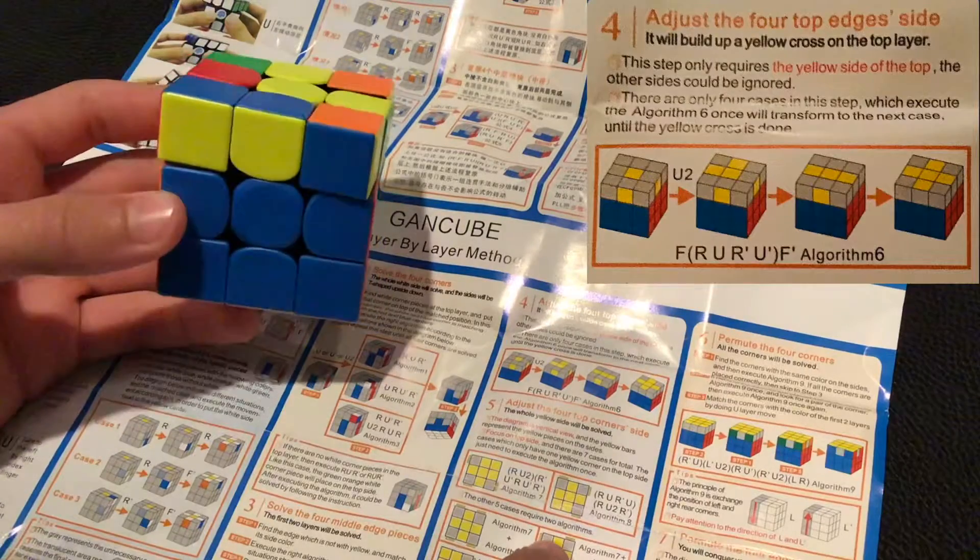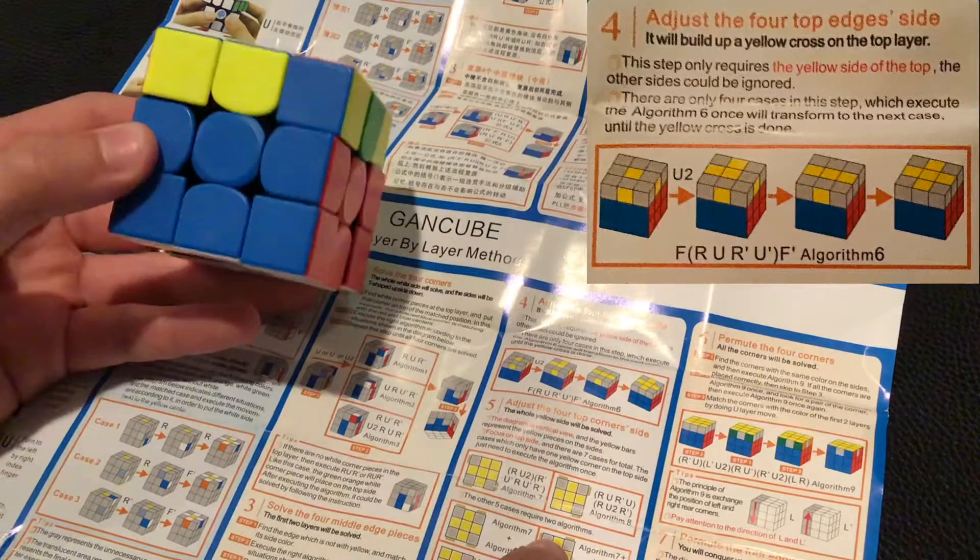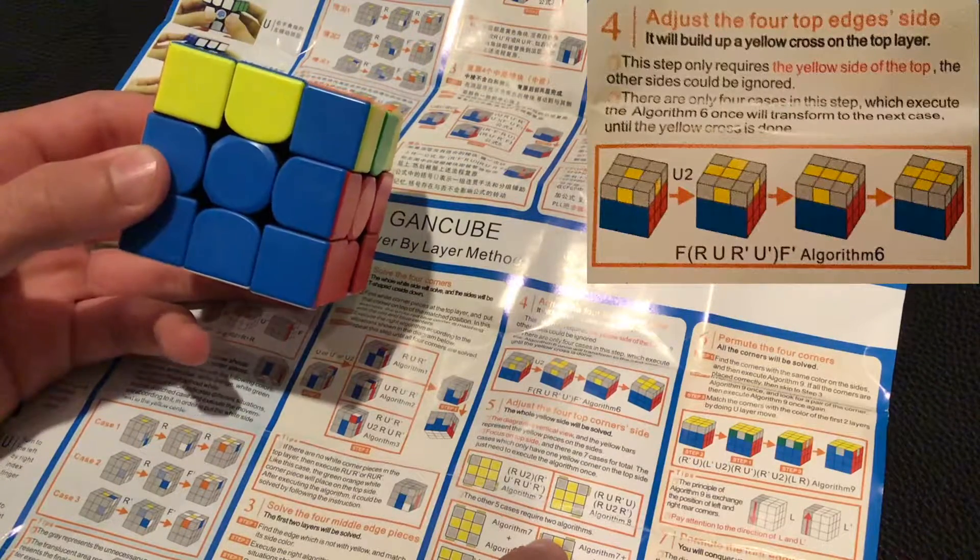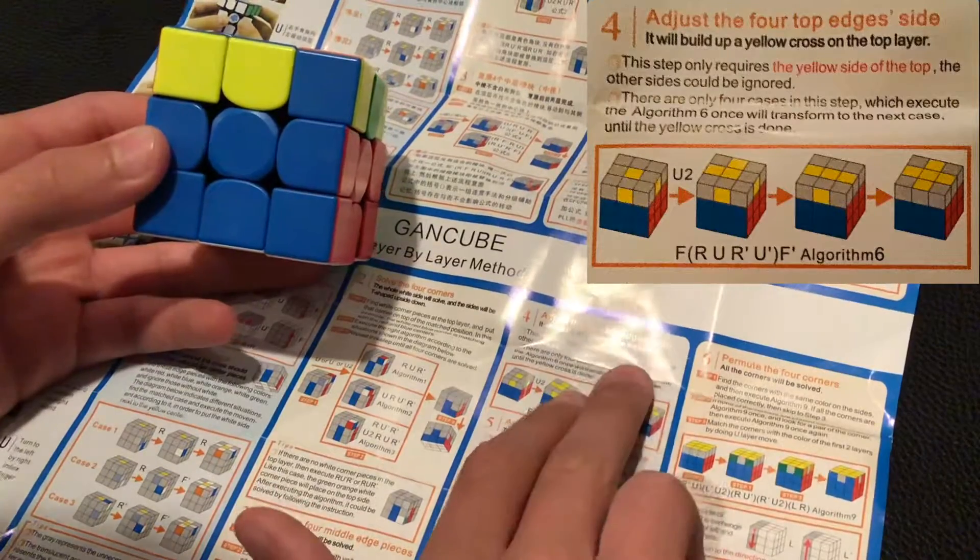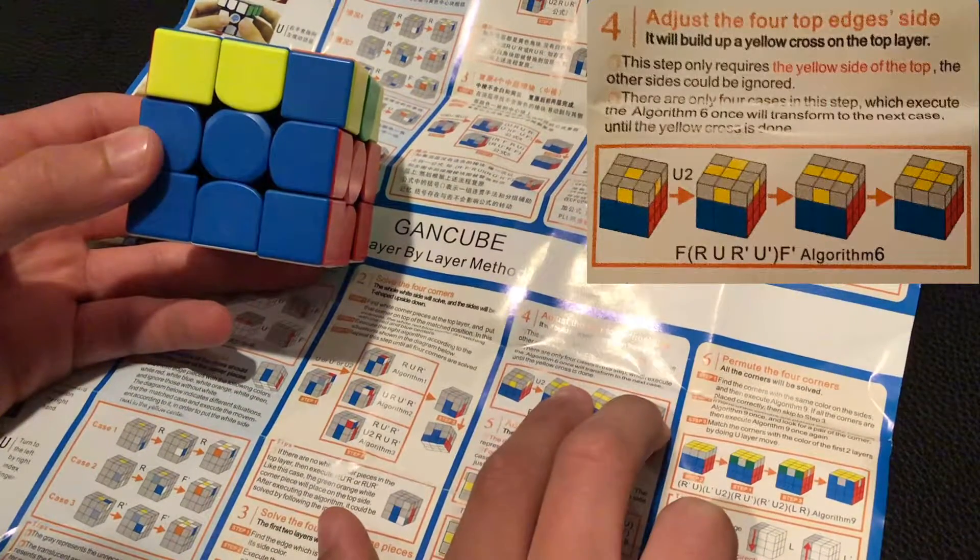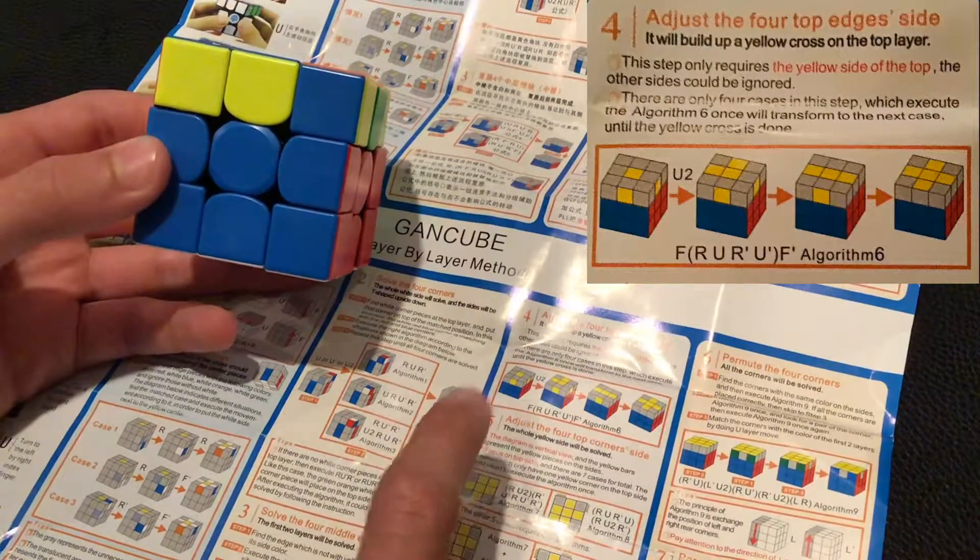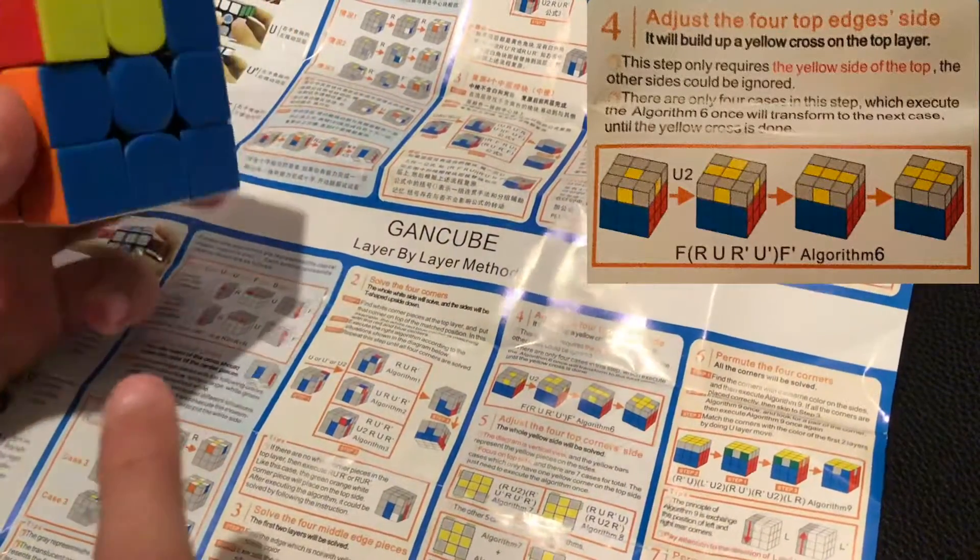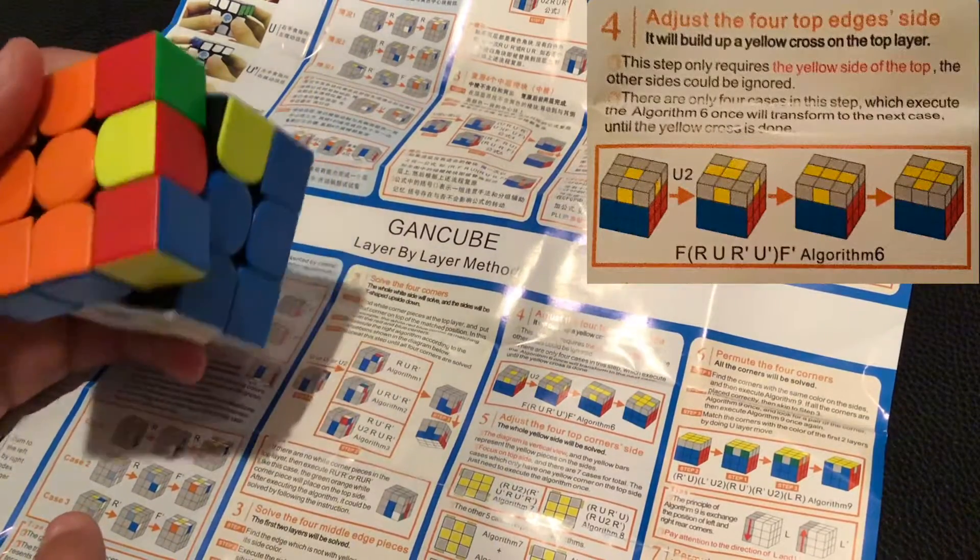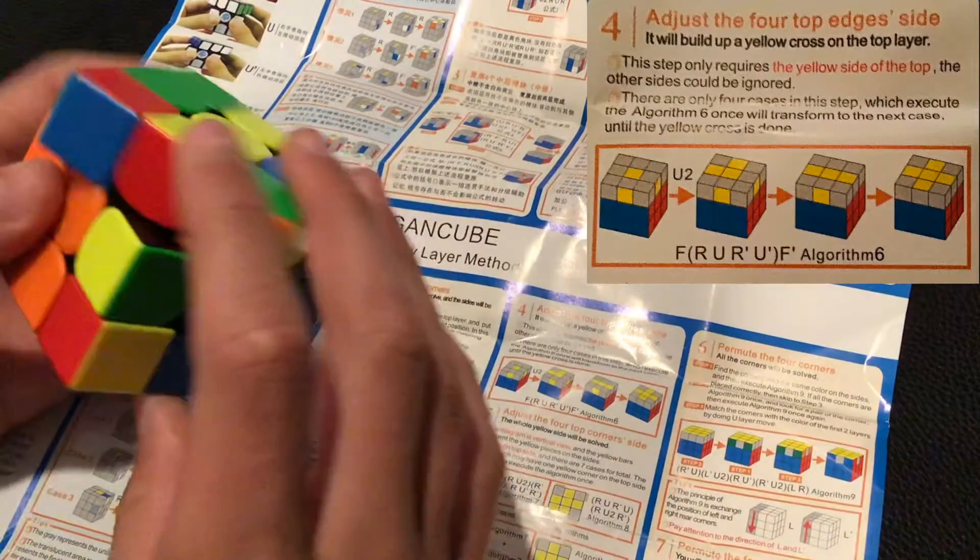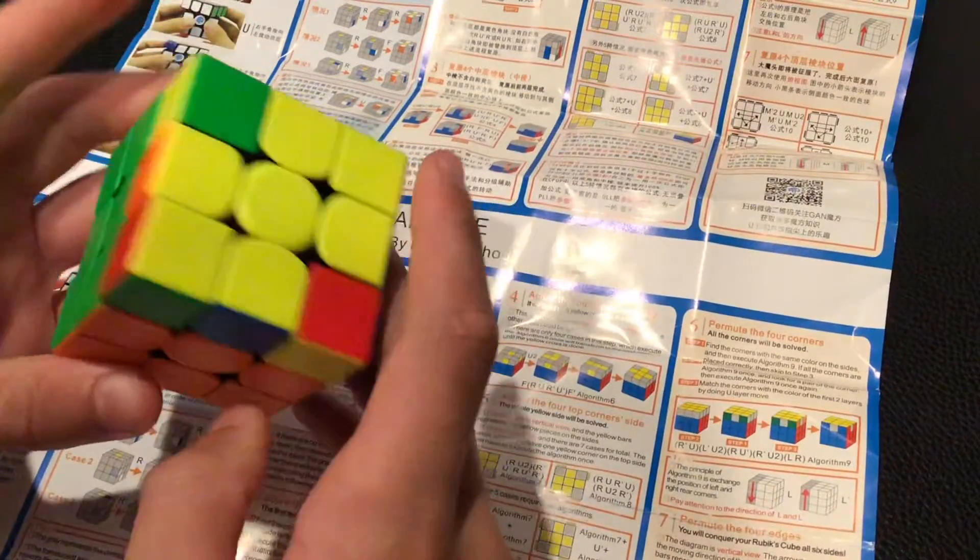So next step, step four. Adjust the top four edges side. It will build up the yellow cross on the top layer. This step only requires the yellow side on top. The other sides will be ignored. There are only four cases in this step, which will execute the algorithm six once, which will transform to the next case until the yellow cross is done. So I'm in this case, and I can just do the F R U R prime U prime F prime. Then I can just do the F R U R prime U prime again. And then I'm in this case.